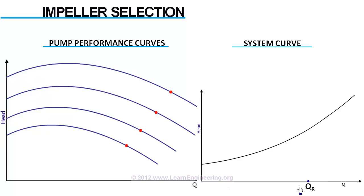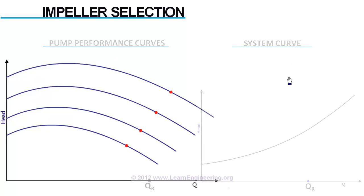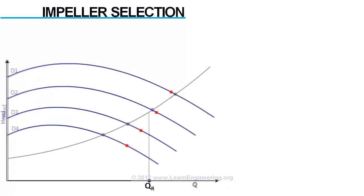The operating point of the pump will be the intersection point of system curve and pump performance curve. So, depending upon selection of impeller, the pump could operate anywhere here. But, we have a requirement of specified flow rate. Out of these operating points, this is the one which is most near to the required flow rate. So, we will select this impeller.